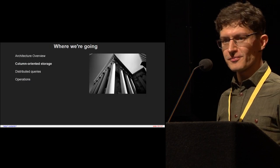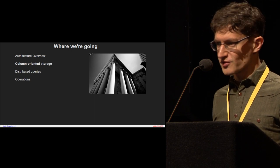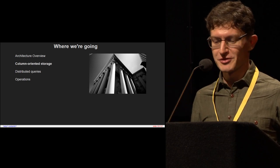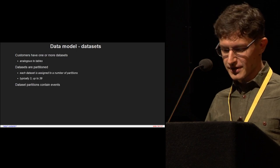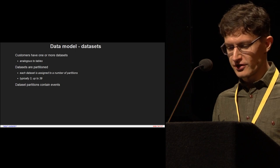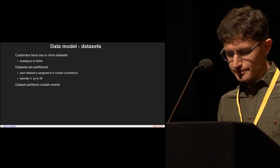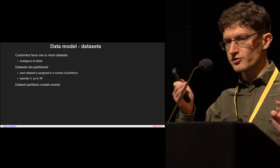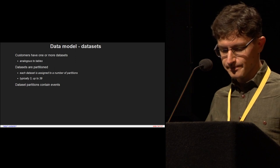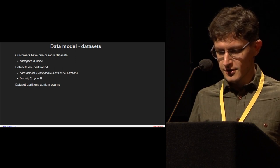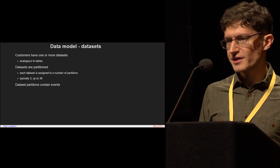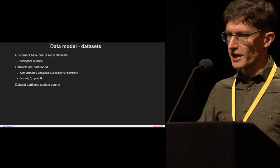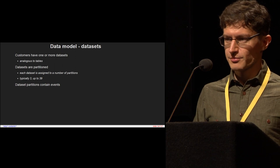Let's zoom in and talk about how exactly we're actually storing this data. The basic partitioning of our data model is that our customers have one or more data sets — that's basically like a table in a traditional database. You might have a data set for your web logs and another for database queries. Data sets are partitioned, meaning we spread out the data across multiple nodes, and each data set gets a number of partitions. Most data sets we're running have three partitions; the largest ones have up to 39 in our current system. Data set partitions contain events.